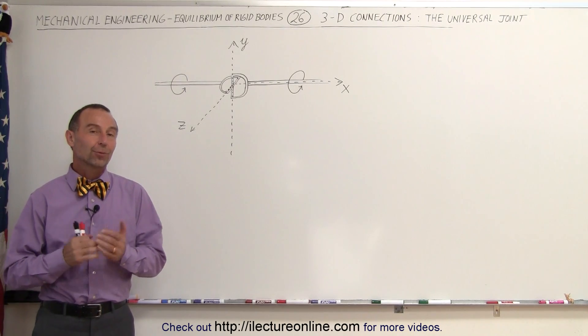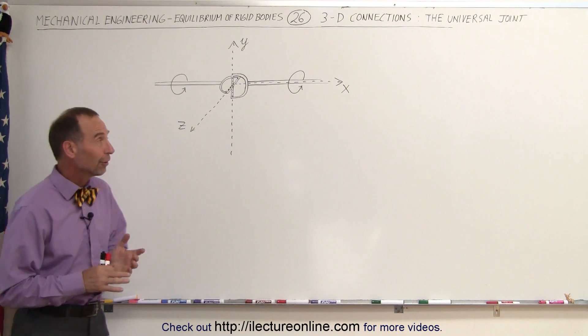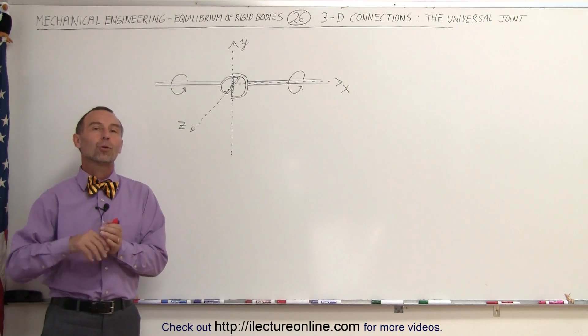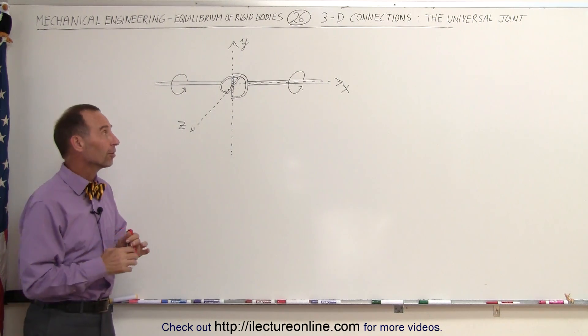Welcome to iLecture Online. Our next 3D connection is the universal joint. A universal joint is a very useful joint that allows the rotational motion of one axis to be transferred to the rotational motion of another axis.